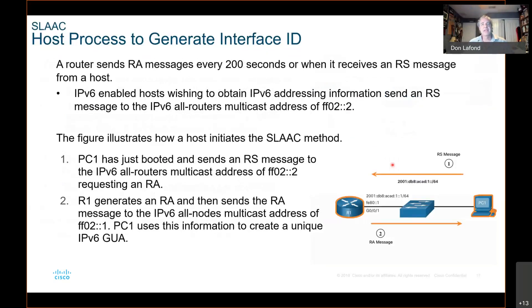A router sends router advertisement messages every 200 seconds or when it receives a router solicitation message from a host. IPv6-enabled hosts wishing to obtain IPv6 address information send a router solicitation — it uses the multicast address FF02, which is all-routers. The figure illustrates how the host initiates the SLAAC method.